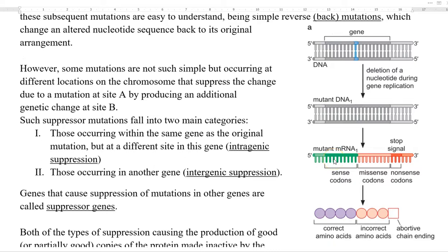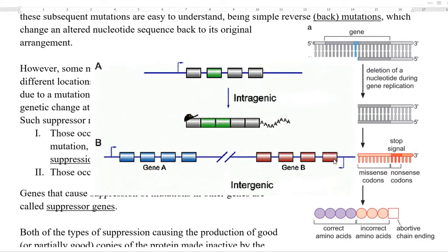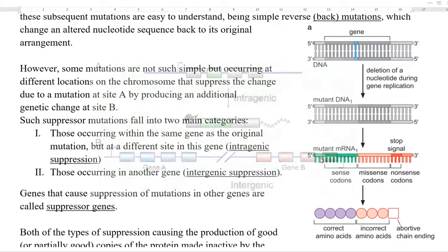Such suppressor mutations can be divided into two forms. The first one is intragenic suppressor mutation. These are mutations occurring within the same gene as the original mutation, but the second mutation occurs at a different site within that same gene. This kind of suppressor mutation is referred to as intragenic suppression.